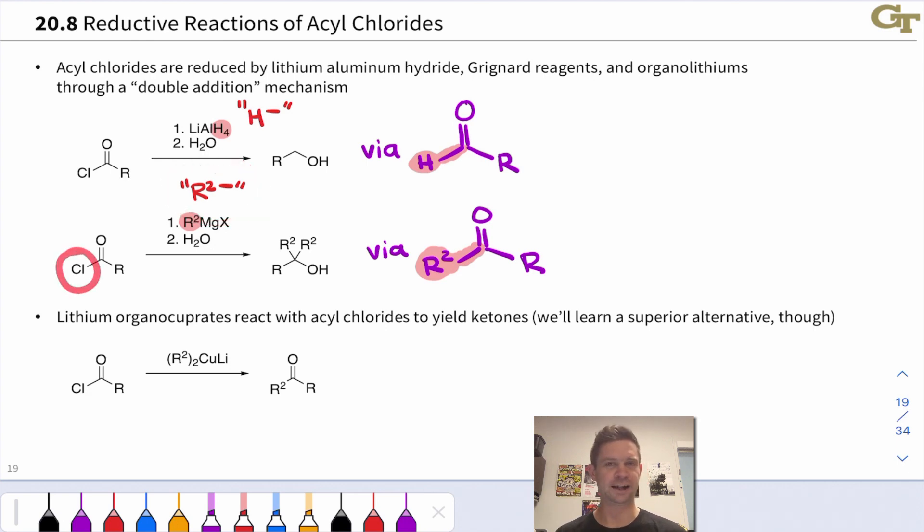That ketone is of course amenable to reaction with the Grignard reagent, and the result is a tertiary alcohol with two copies of that nucleophilic R2 group built into the product. Just like we got two H's with LiAlH4, we end up with two R-groups in the reaction of a Grignard reagent with an acyl chloride.